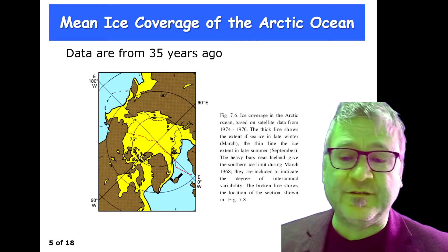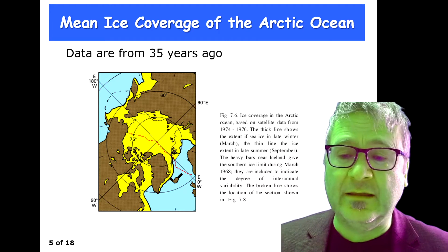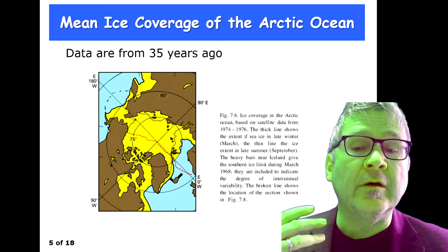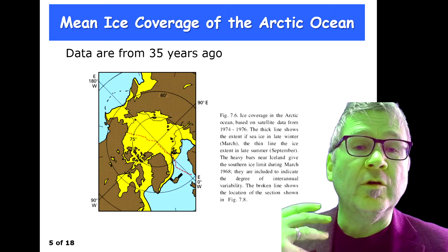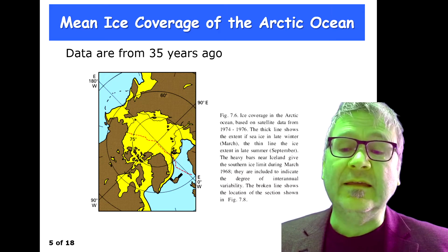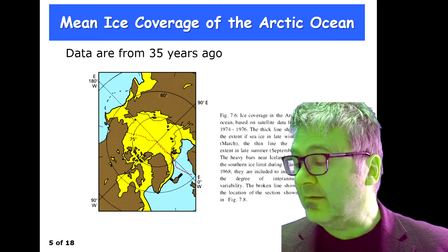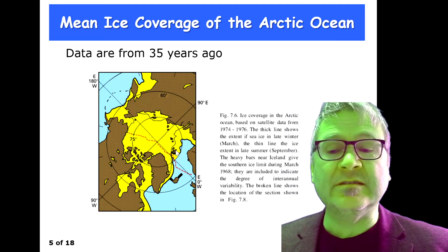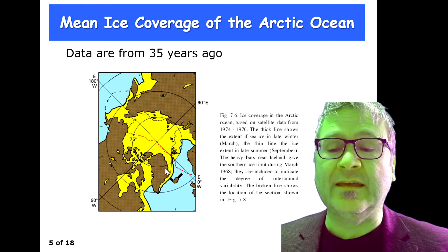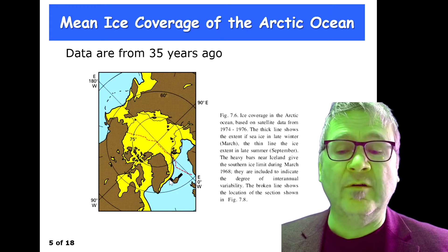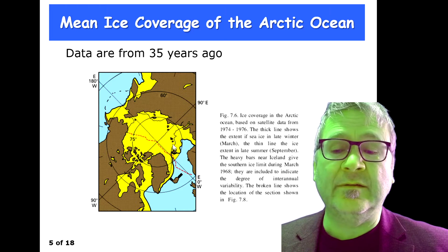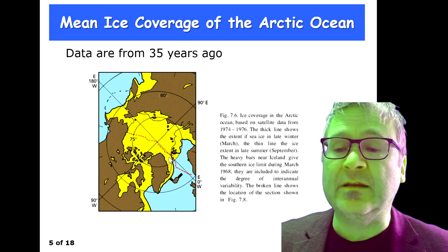You can also see the outflow of cold water and sea ice into the Greenland Sea. I activate the mouse — this again is the connection to the Greenland Sea as shown here, and you can see this tongue of ice coming up in the Greenland Sea.